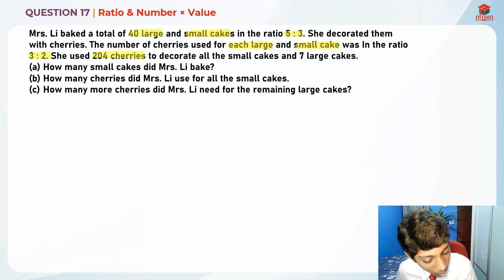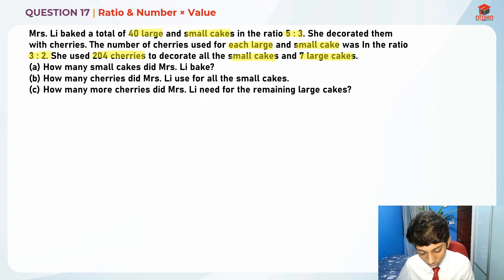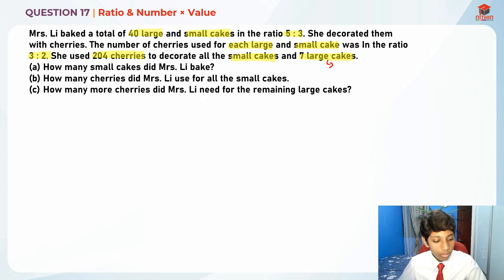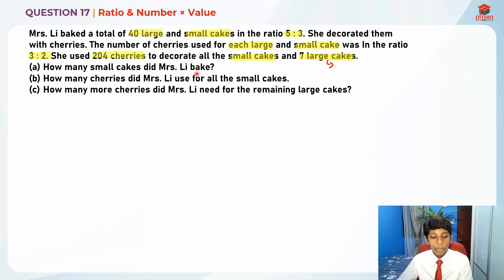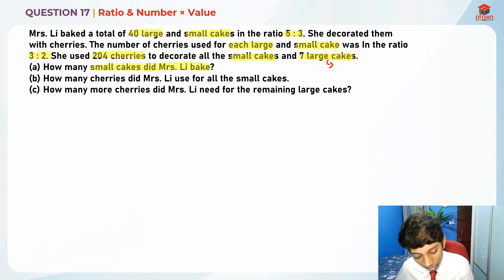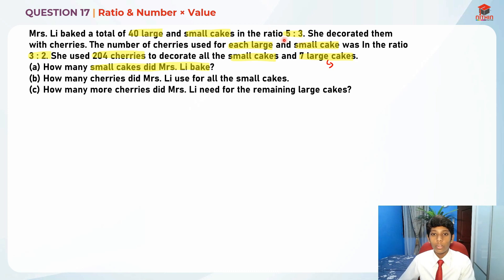She used 204 cherries to decorate all the small cakes and 7 large cakes. We'll find the remaining number of cakes — which is out of 40 — later, since we don't know the number of small cakes yet. For Part A, they're asking: how many small cakes did Mrs. Lee bake?